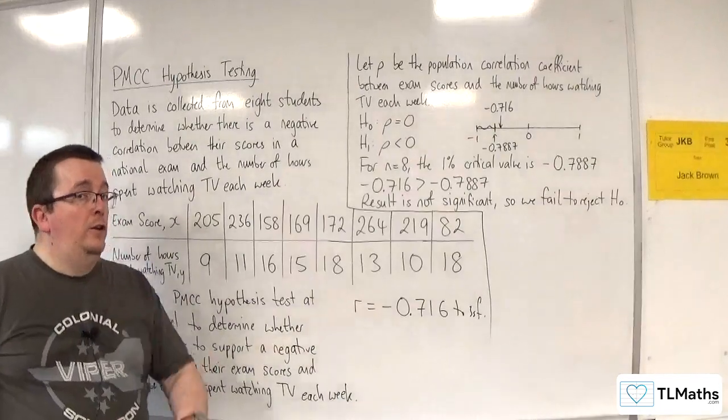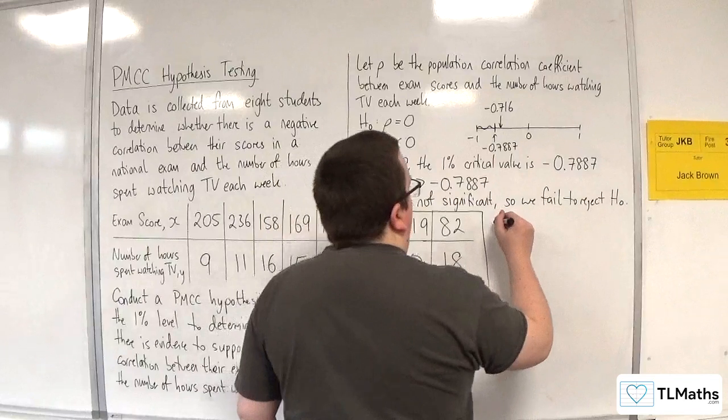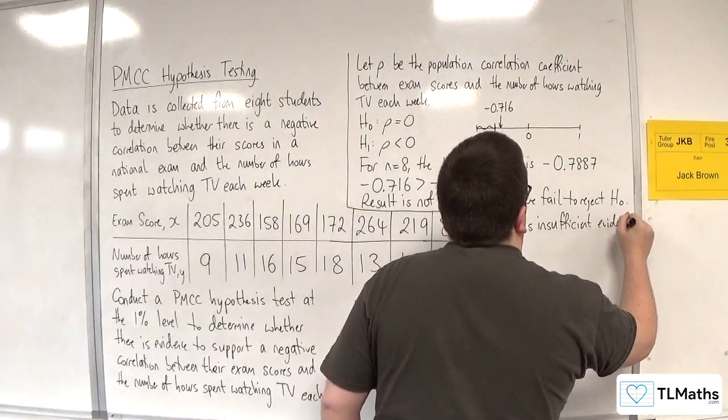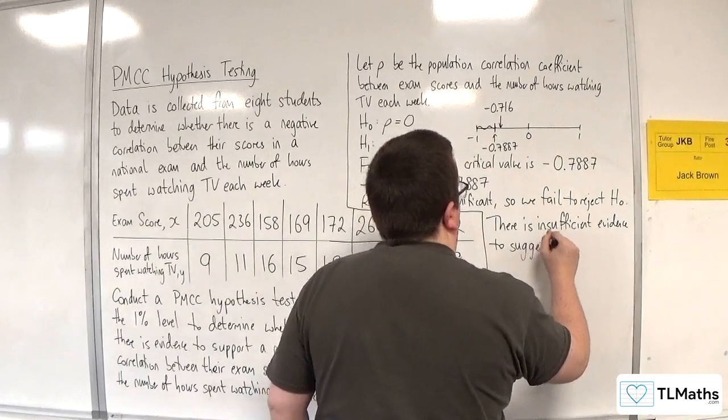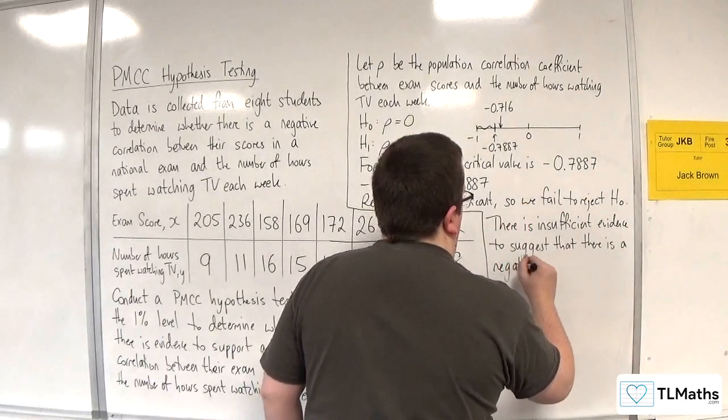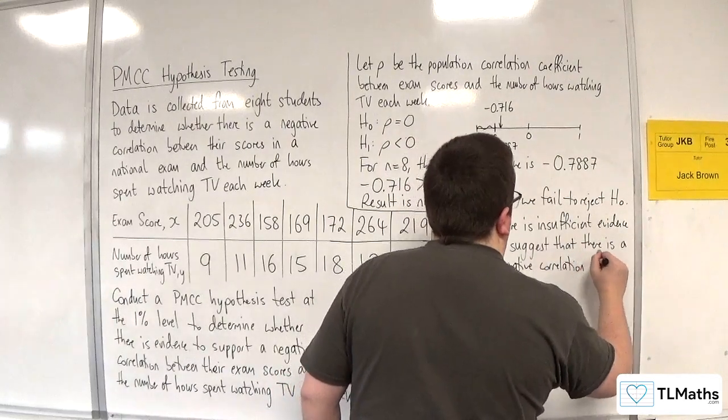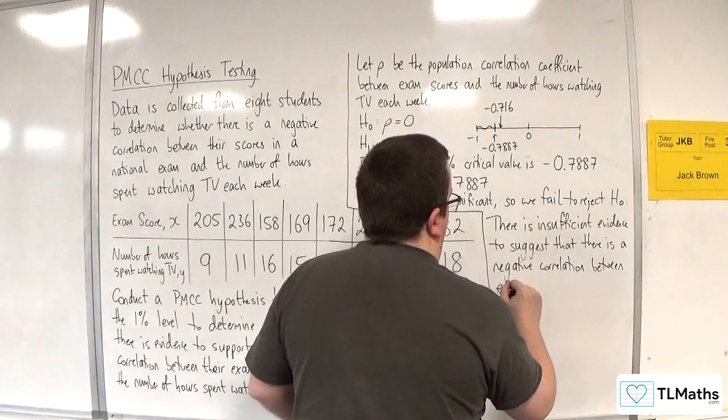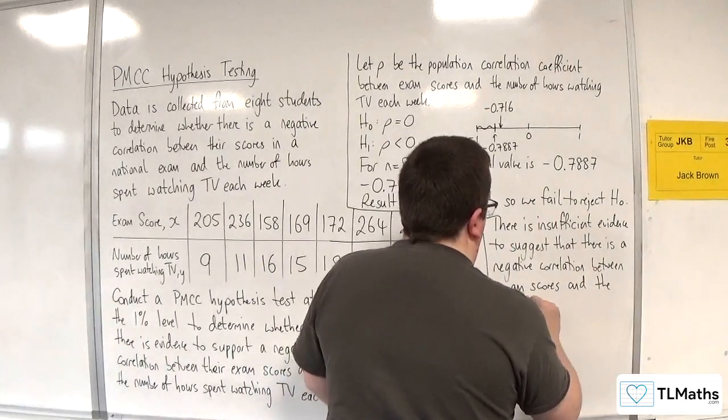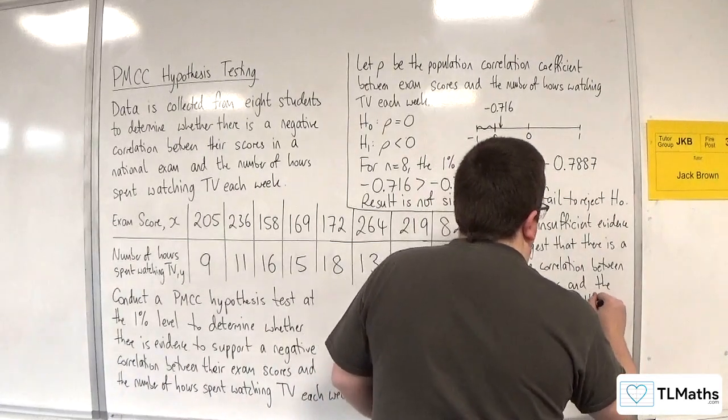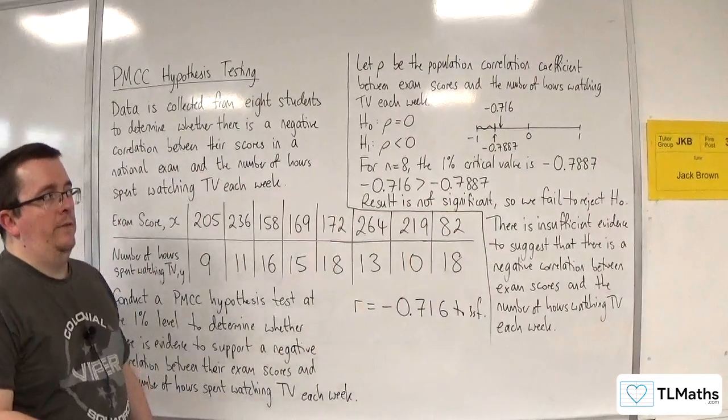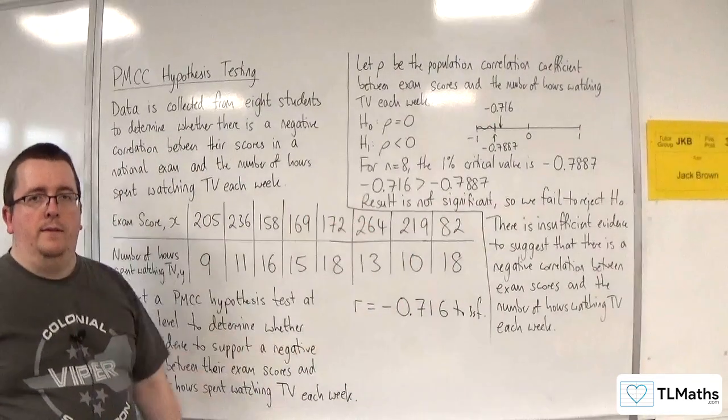Now we then need to write a concluding statement that is non-committal. Now for this, we can say there is insufficient evidence to suggest that there is a negative correlation between exam scores and the number of hours watching TV each week. So that is what we need to write down to get the marks for our PMCC hypothesis test.